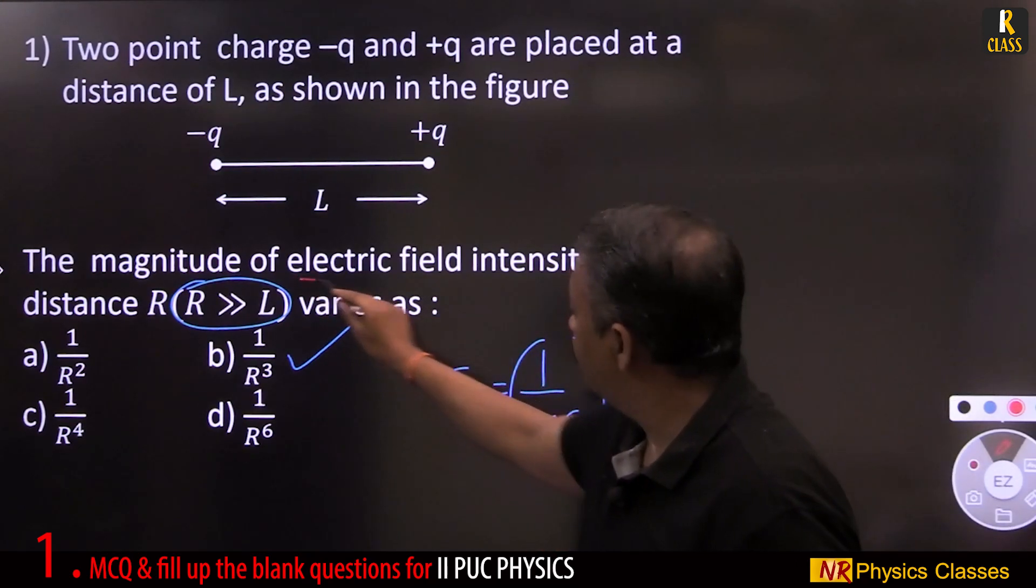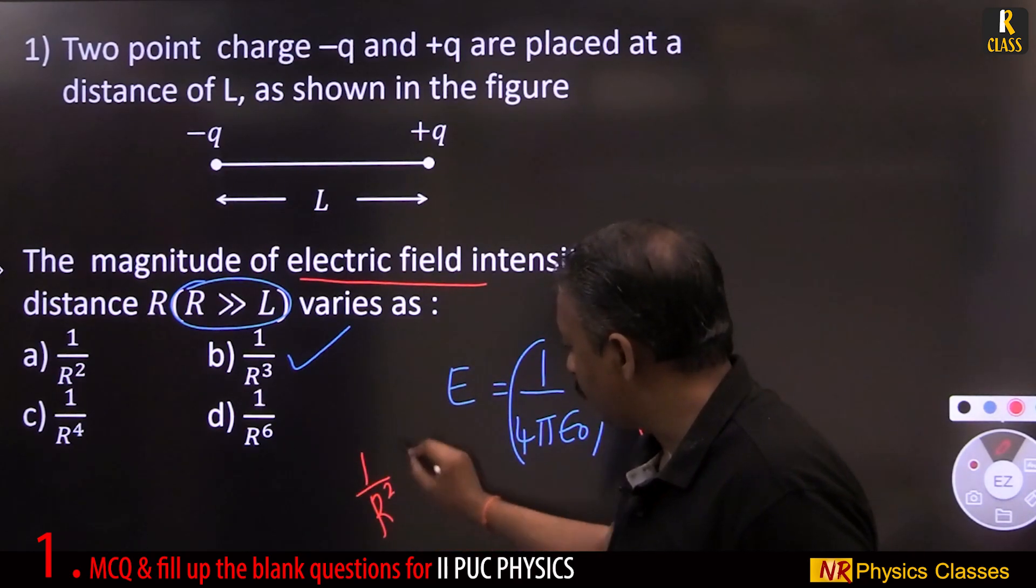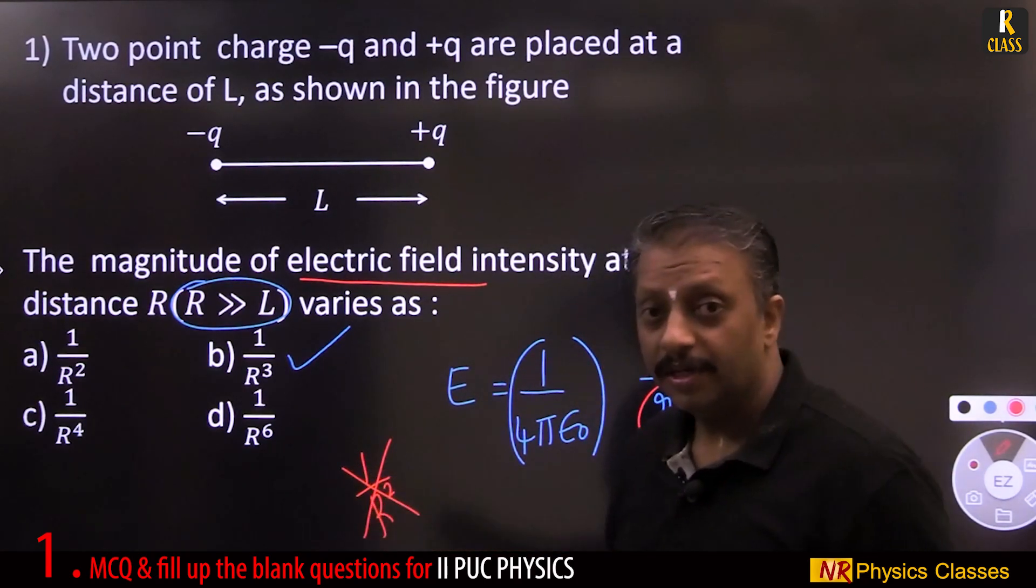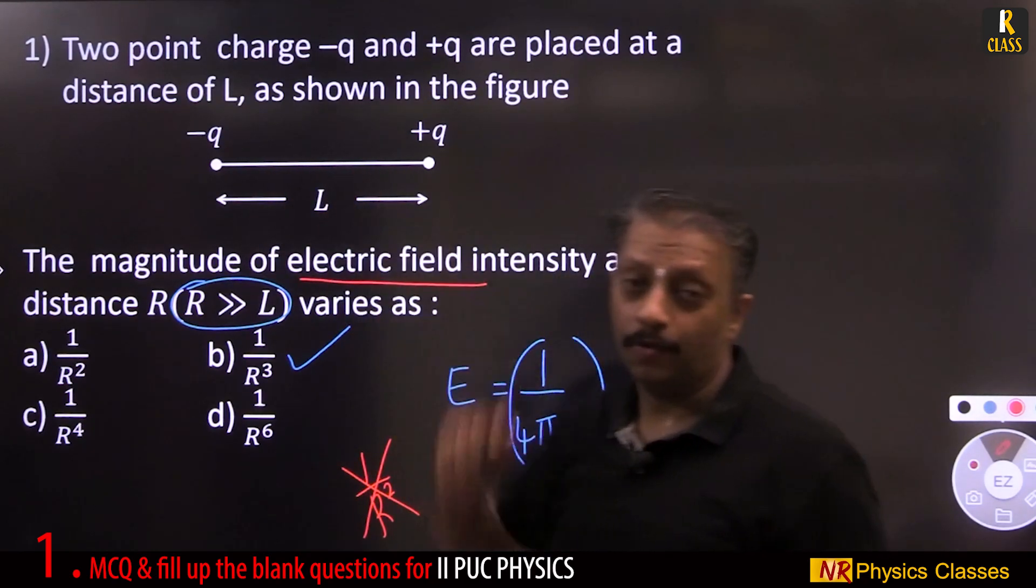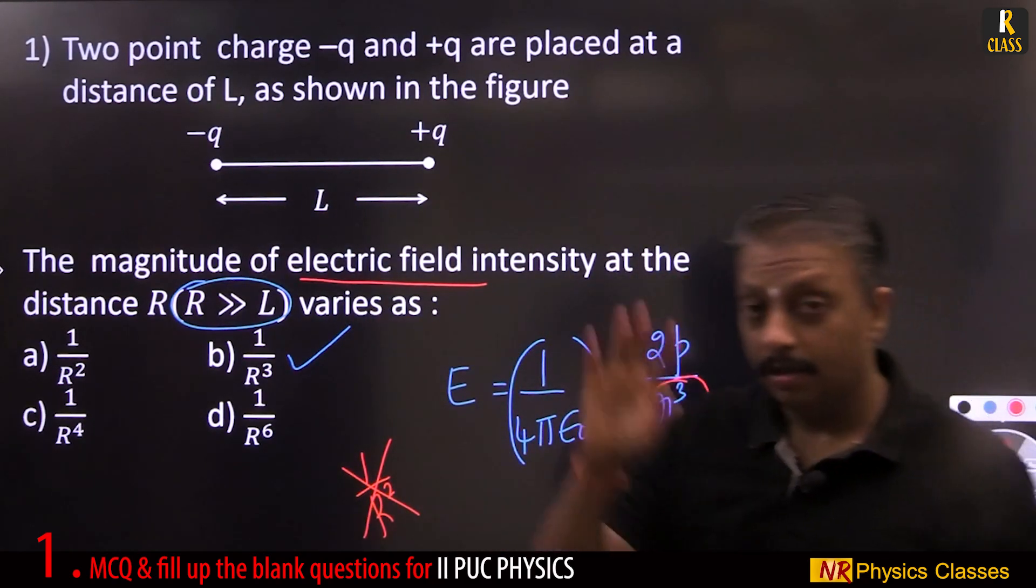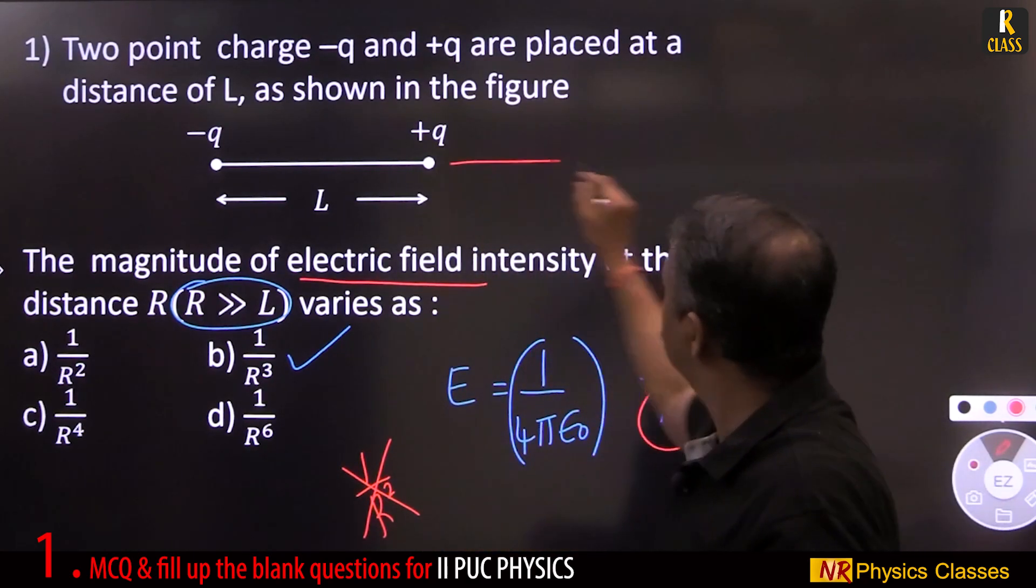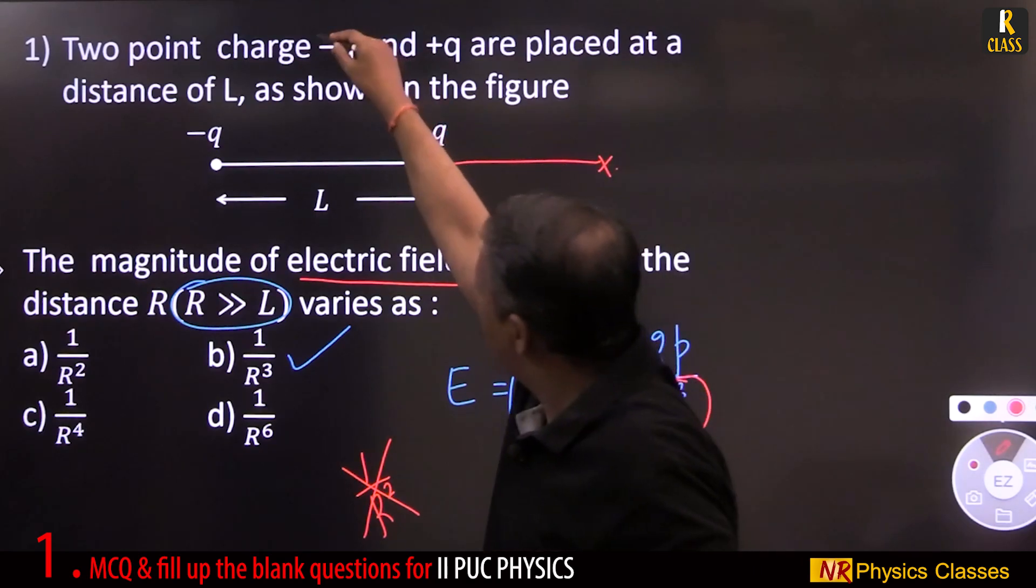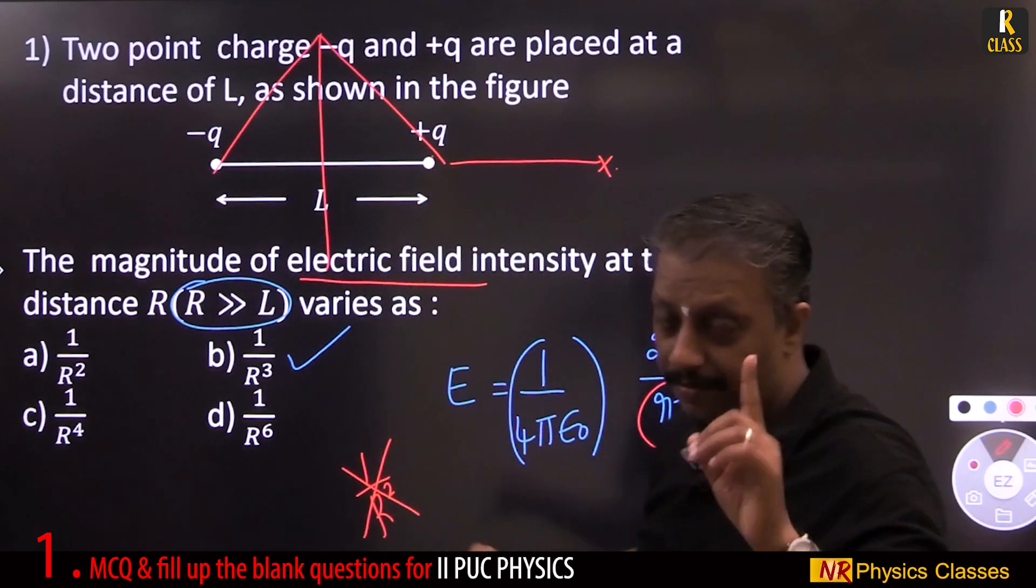Magnitude of electric field, if this is asked, 1 by r square is the common mistake. This 1 by r square is for a point charge, but this is an electric dipole. Recall those two derivations: electric field at a point on the axis, electric field at a point on the equatorial plane. Be careful.